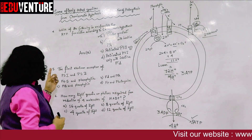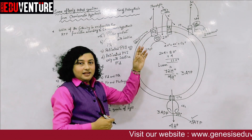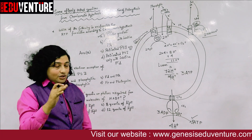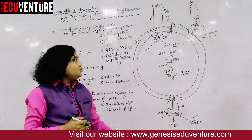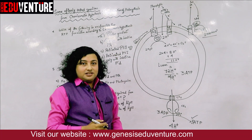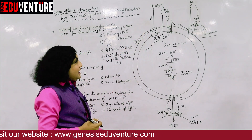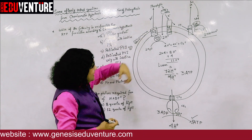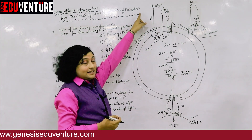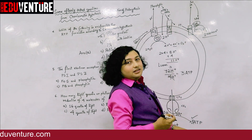Question 5: what is the first electron acceptor of PS1 and PS2? This is a direct question. From the diagram, the first electron acceptor of PS2 is pheophytin. Initially the redox potential of PS2 and PS1 is lesser than that of their immediate electron carrier, but as they are activated by light energy, redox potential decreases and ionization potential increases, releasing electrons. From PS1, the first electron acceptor is the iron sulfur cluster (FES).